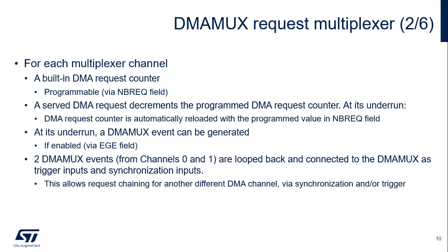For each multiplexer channel, a built-in DMA request counter is programmable via the NBREQ field. A served DMA request decrements the programmed DMA request counter. At its underrun, the DMA request counter is automatically reloaded with the programmed value in the NBREQ field. At its underrun, a DMA-MUX event can be generated if enabled via the EGE field. Two DMA-MUX events from channels 0 and 1 are looped back and connected to the DMA-MUX as trigger inputs and synchronization inputs, allowing request chaining for another different DMA channel via synchronization and/or trigger.